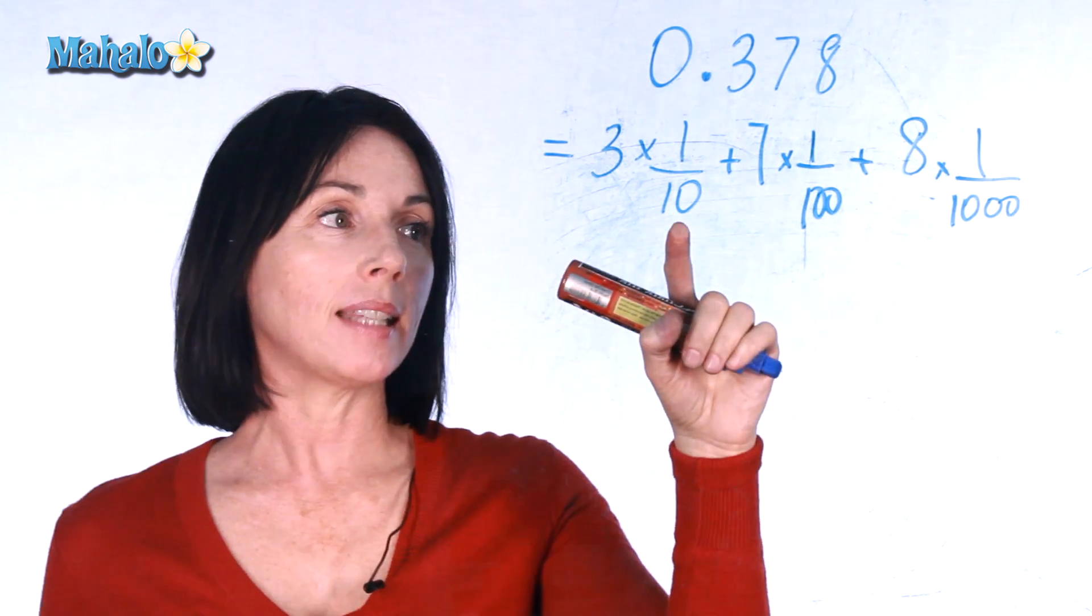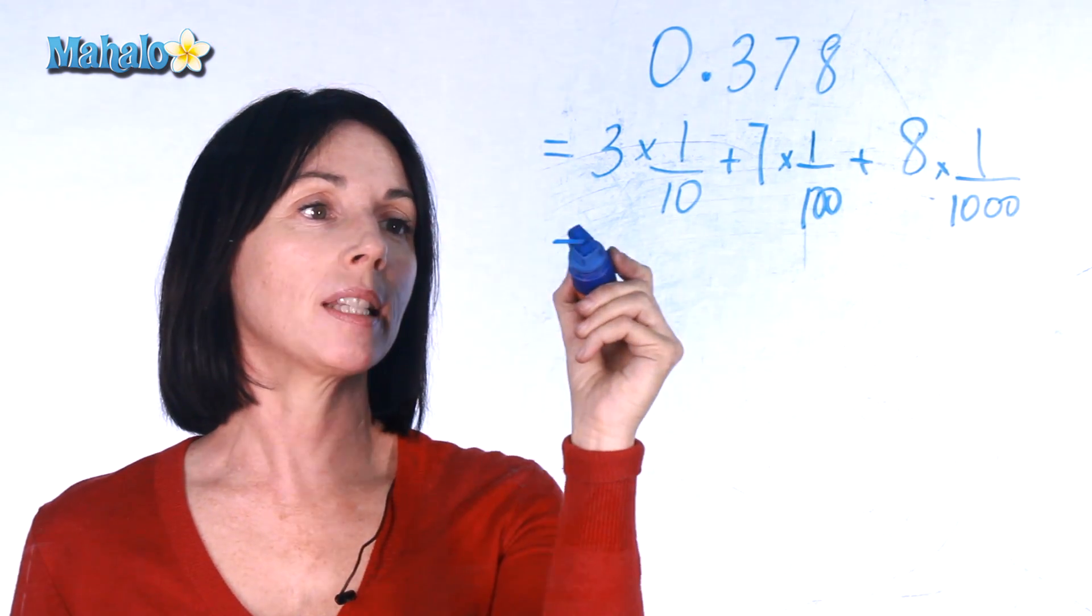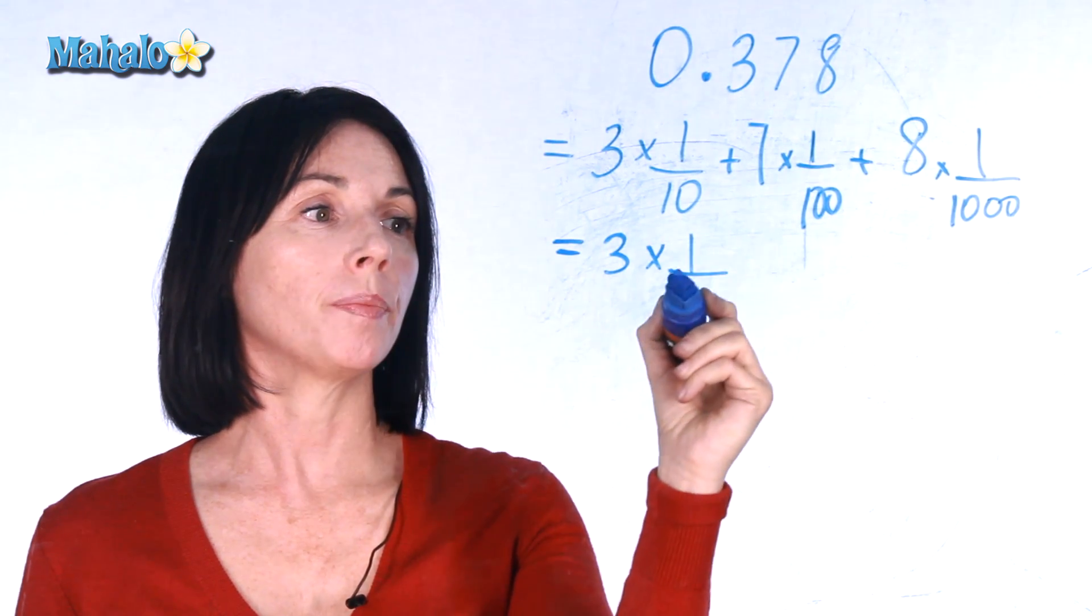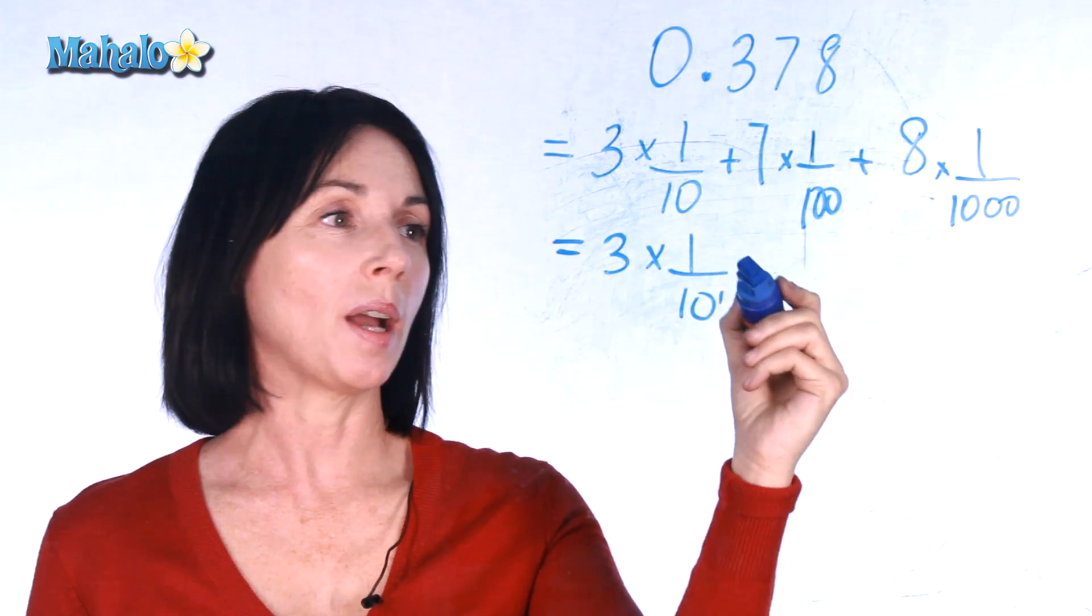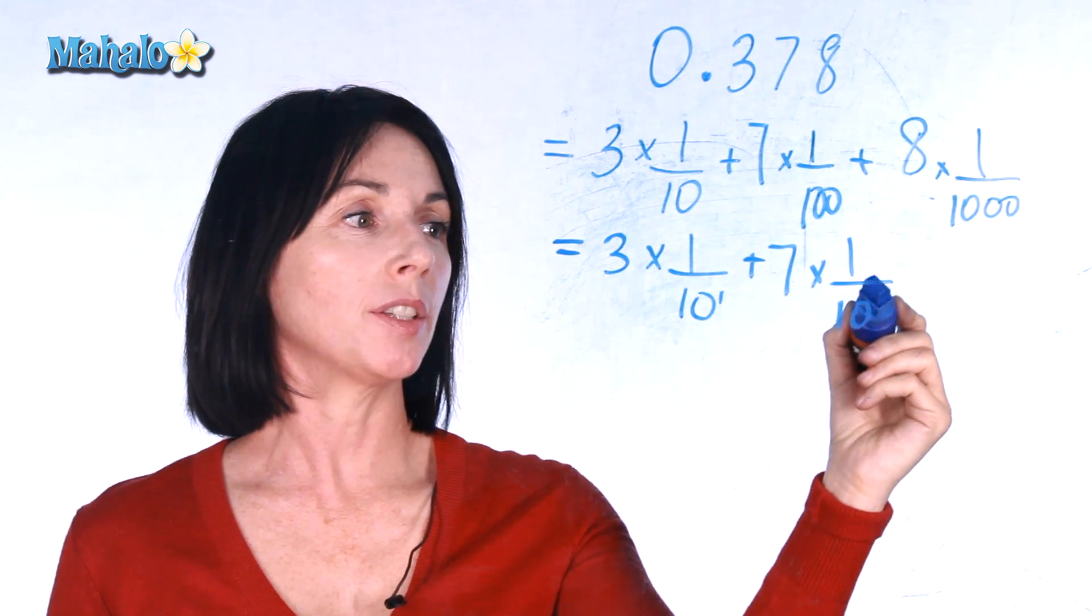Now let's rewrite 10, 100 and 1 thousand using exponents. So this gives us 3 times 1 over 10 to the power of 1 plus 7 times 1 over 10 to the power of 2.